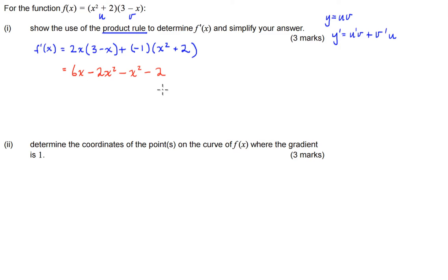We're going to conjoin all our like terms here and this is going to be equal to negative 3x squared plus 6x minus 2. So that's going to be our derivative f dash of x.